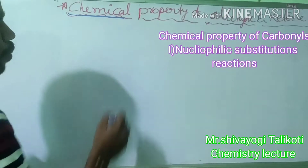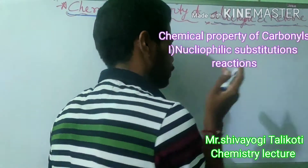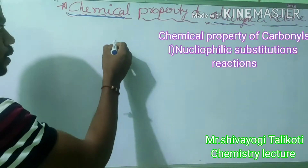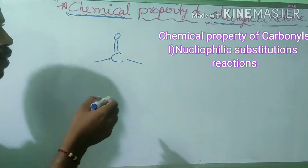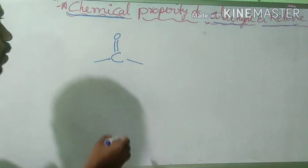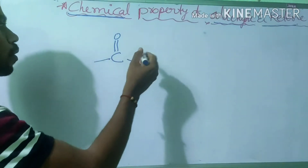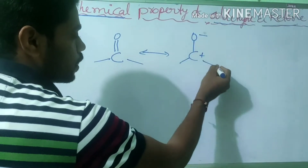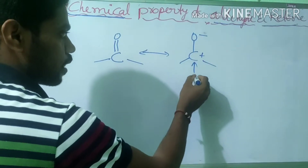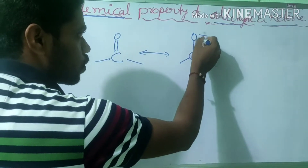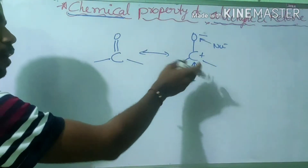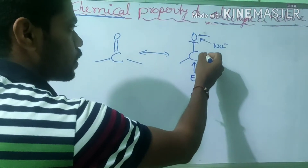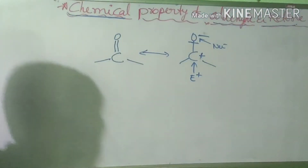So today I'll go for the chemical properties of aldehydes and ketones. We know that aldehydes and ketones both contain the carbonyl group. The resonance structure of carbonyl shows O minus and C plus - meaning the carbon is electron deficient, so it acts as an electrophile. The oxygen is electron rich, so it acts as a nucleophile.